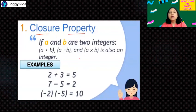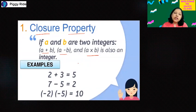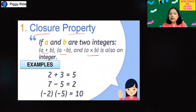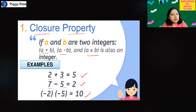Closure property means if you have two integers a and b, and you add, subtract, or multiply both integers, the answer will always be an integer. For example: 2 plus 3 equals 5, which is an integer. 7 minus 5 equals 2, which is an integer. Multiplying two negative integers gives plus 10, which is again an integer. So integers are closed under these operations.